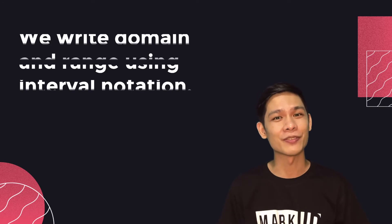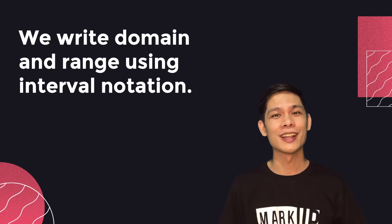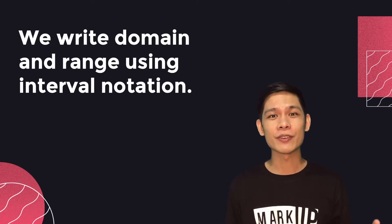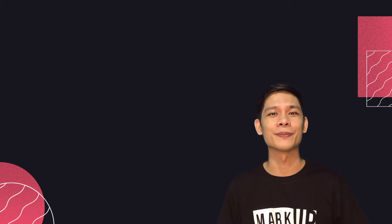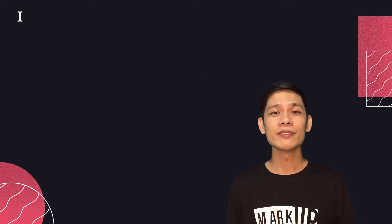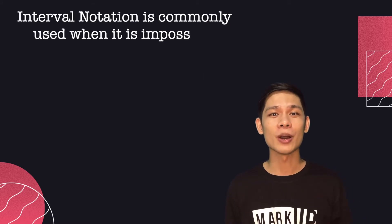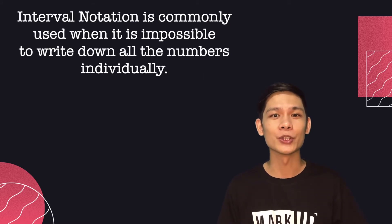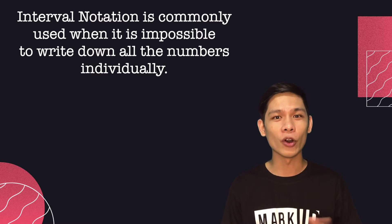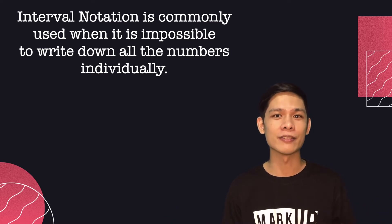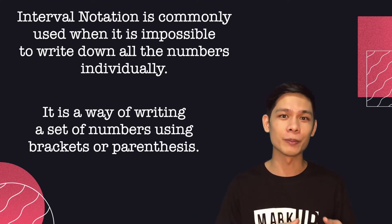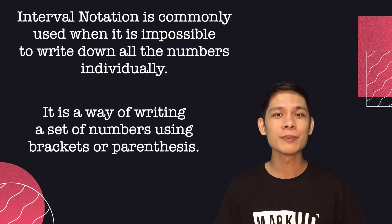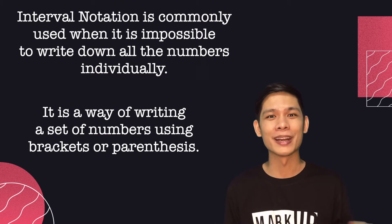How do we write down the domain and range of a function? We write down the domain and range of a function using interval notation. An interval notation is commonly used when it is impossible to write down all the numbers individually. It is a way of writing a set of numbers using brackets or parentheses.